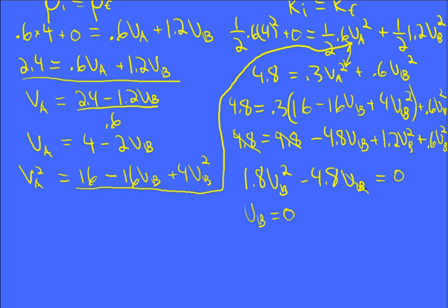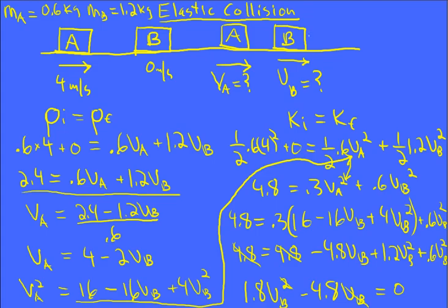We don't want that one, so I divide both terms by VB. And I get VB is 4.8 over 1.8, and that's about 2.67 meters per second. So that is how fast the stationary larger mass is going after the collision.